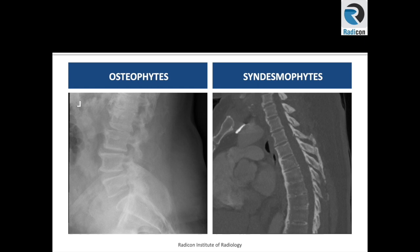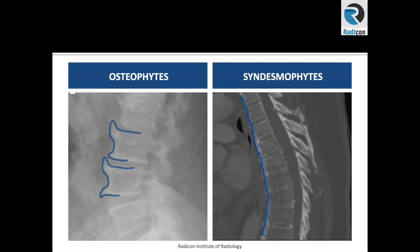Osteophytes on the left are horizontal at their start; however, they will turn upwards and cause bridging osteophytes. Syndesmophytes are vertical, as they are in line with the anterior and posterior longitudinal ligaments, representing calcified enthesis.